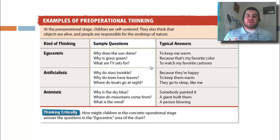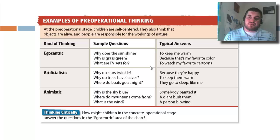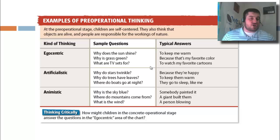There are also artificialistic and animistic kinds of thinking. Animistic thinking involves giving human qualities to inanimate objects — why do stars twinkle? Because they're happy. Artificialistic thinking means believing that humans created everything around them: the sky, the mountains, the wind — humans made all of that.